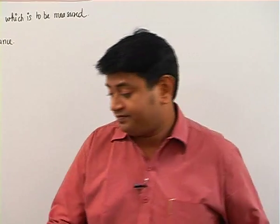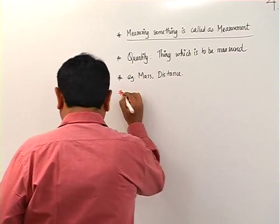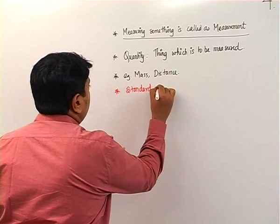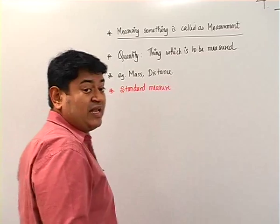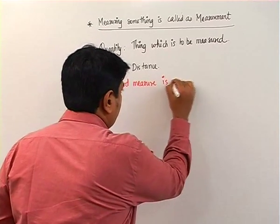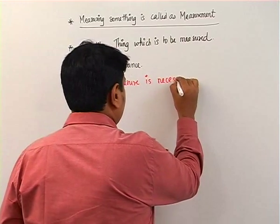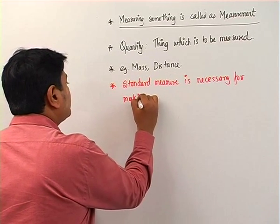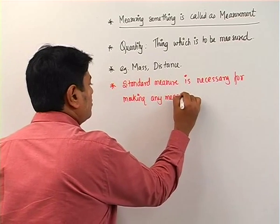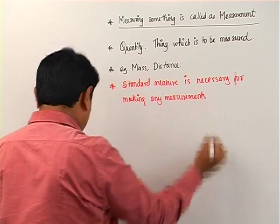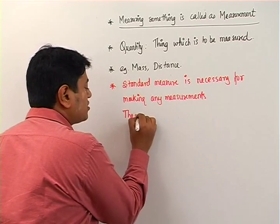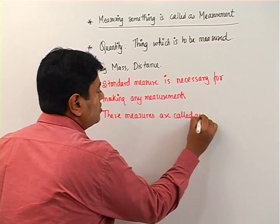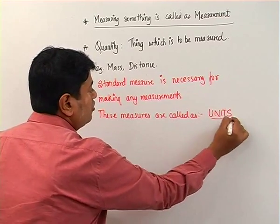A standard measure is necessary for making any measurements. These standard measures are called units. So what we are saying is that we need units — and these measures are called units.